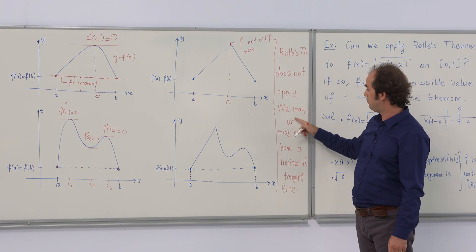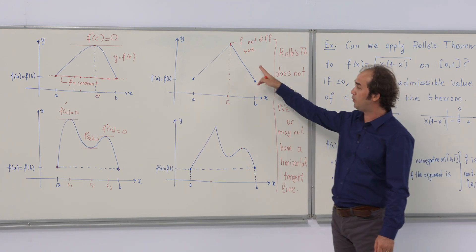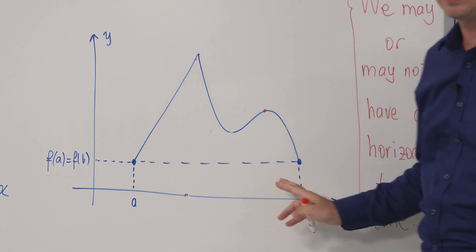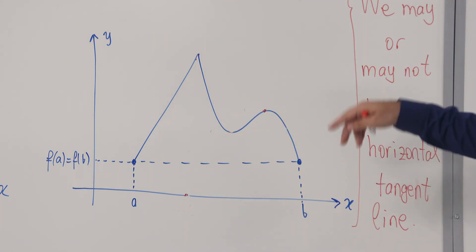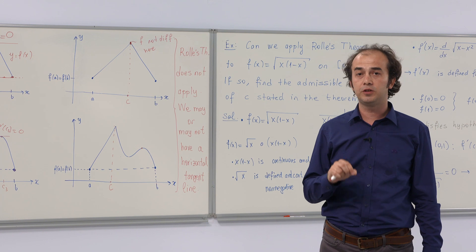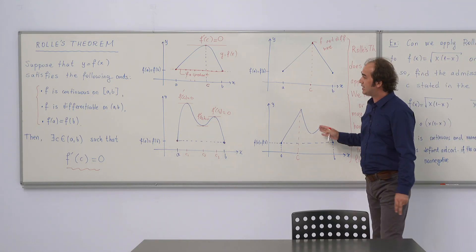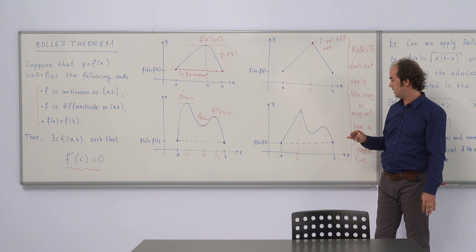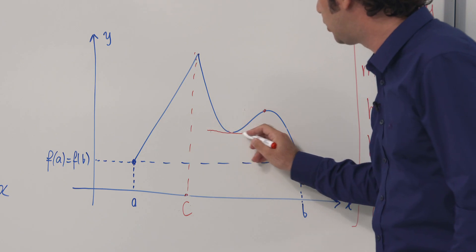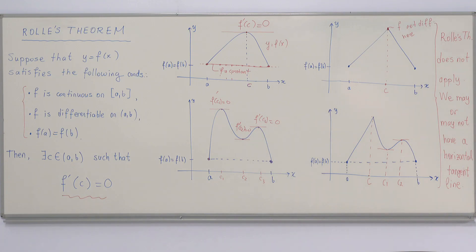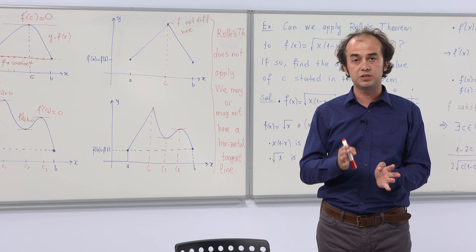If Rolle's theorem does not apply, we may or may not have a horizontal tangent line. In the first example, the differentiability condition is not satisfied and we don't have a horizontal tangent line. In the second example, the function also loses differentiability at that point c, so again we say nothing by Rolle's theorem. Although the conditions are not satisfied there, we actually do have two horizontal tangent lines — illustrating that when conditions fail, we cannot conclude either way.